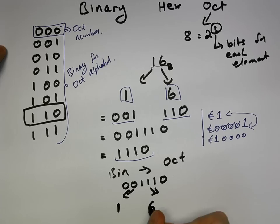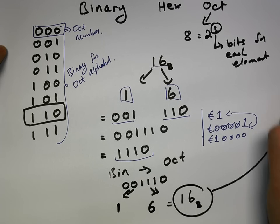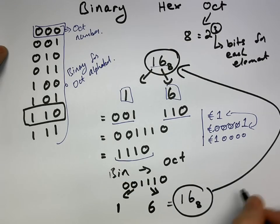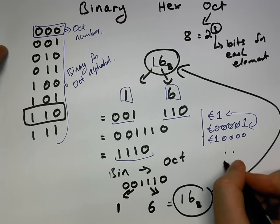So one, one, zero goes to one, then six for the one, one, zero. We join those back up again. We have sixteen base eight, which is exactly what we started off with at the start. So we're all happy. We'll draw our little happy face.